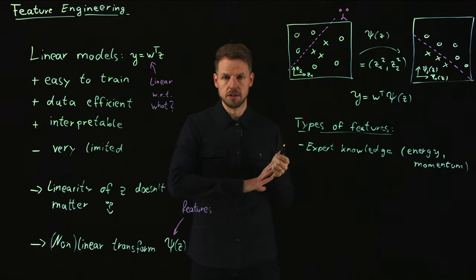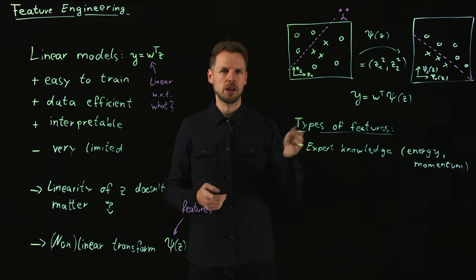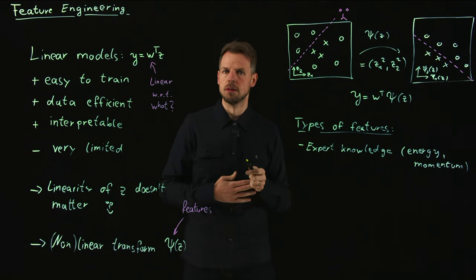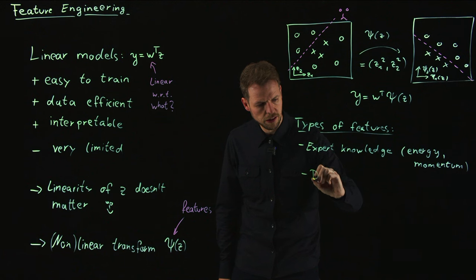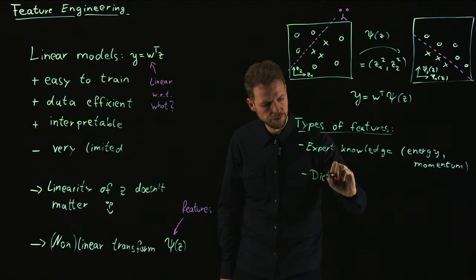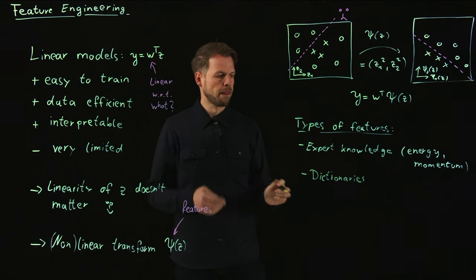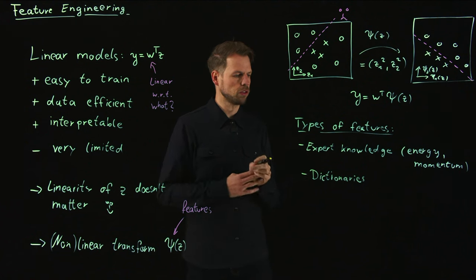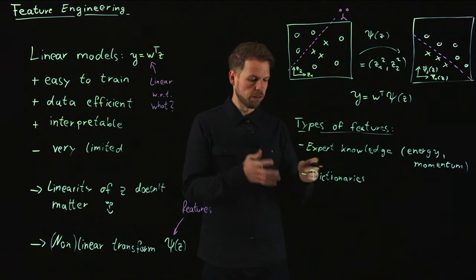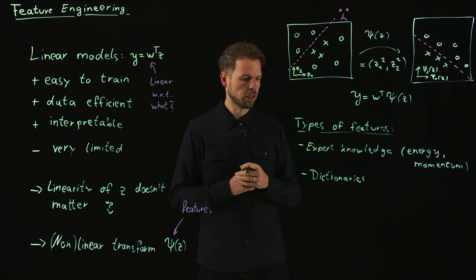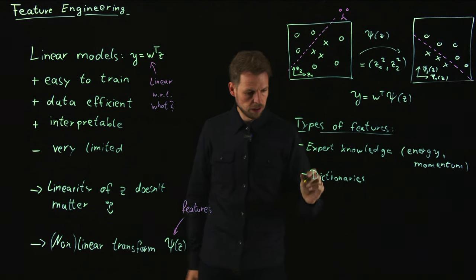But of course this reaches its limitations if the system is overly complicated or if an expert is not available. Different things that you can do instead is you can define dictionaries of features. This means a bunch of monomial terms or radial basis functions, Fourier modes, standard features or basis functions that can be used for function approximation in general as well.